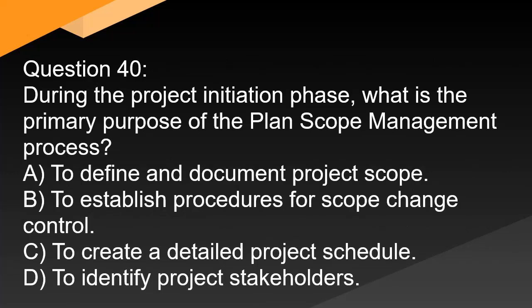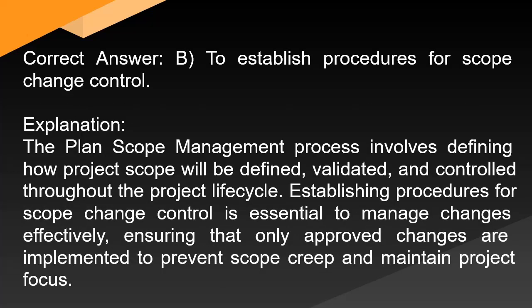Question 40: During the project initiation phase, what is the primary purpose of the plan scope management process? A. To define and document project scope. B. To establish procedures for scope change control. C. To create a detailed project schedule. D. To identify project stakeholders. Correct answer: B. To establish procedures for scope change control. Explanation: The plan scope management process involves defining how project scope will be defined, validated, and controlled throughout the project lifecycle. Establishing procedures for scope change control is essential to prevent scope creep and maintain project focus.